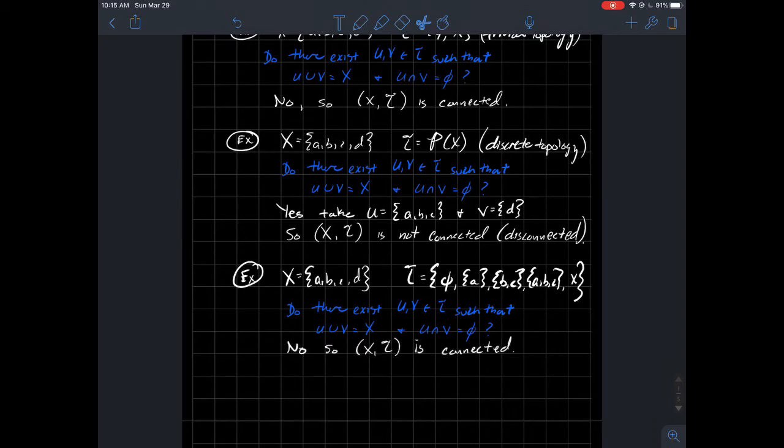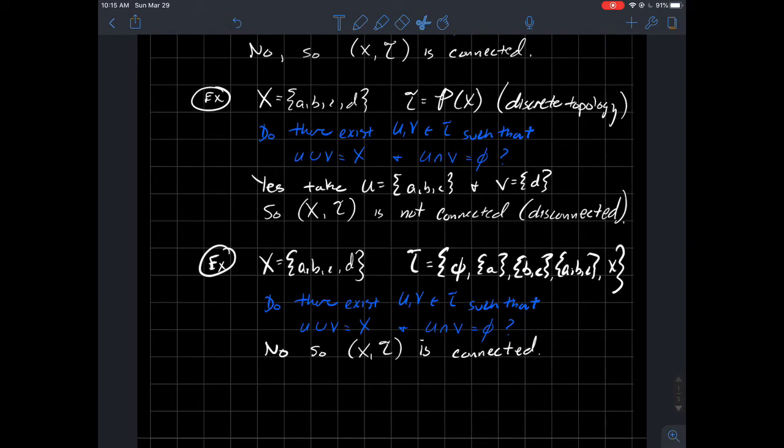So in that case, no. No matter what I pick, if I pick anything out of that T that I'm telling you about right here, it's not possible to union those to get the whole set back, right? They miss d, unless I use X itself. But if I use X itself, then the intersection with X and another open set can't be the empty set. So it's not possible to separate X into two disjoint open pieces.